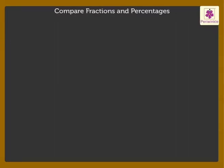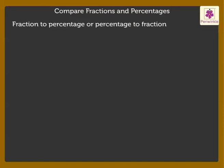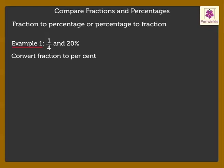Further, if we have a fraction and a percentage, we either convert the fraction to a percentage or vice versa. Now, let's compare 1 upon 4 and 20%. Let's convert the fraction into percent. 1 upon 4 is equal to 1 upon 4 into 100% is equal to 25%, which is greater than 20%.